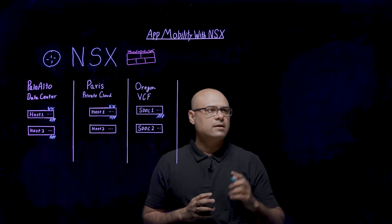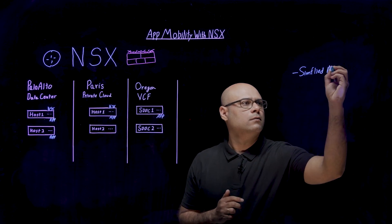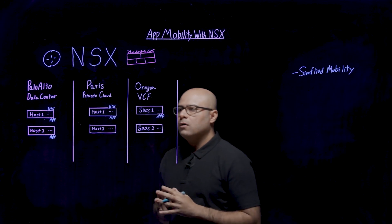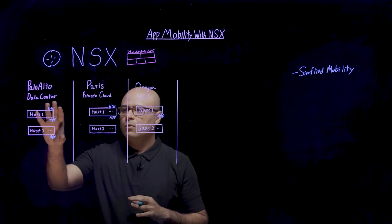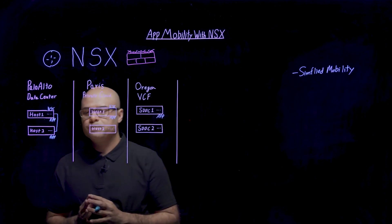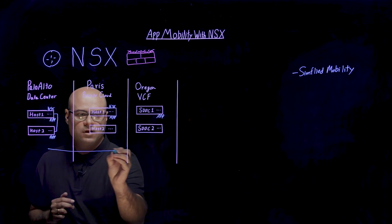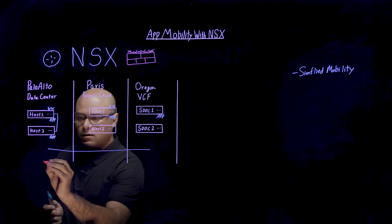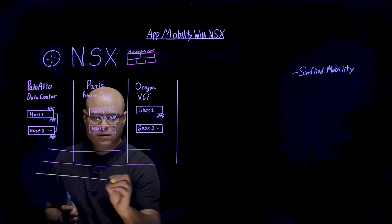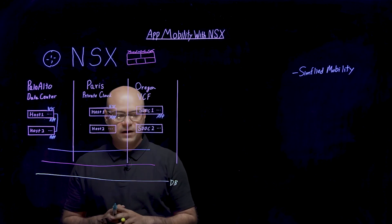So let's start with simplified mobility. In this example, our customer is looking to deploy networking where all the applications can connect with each other. They can deploy the NSX overlay not only within this data center, but also across data centers — typically represented as three-tier segments.